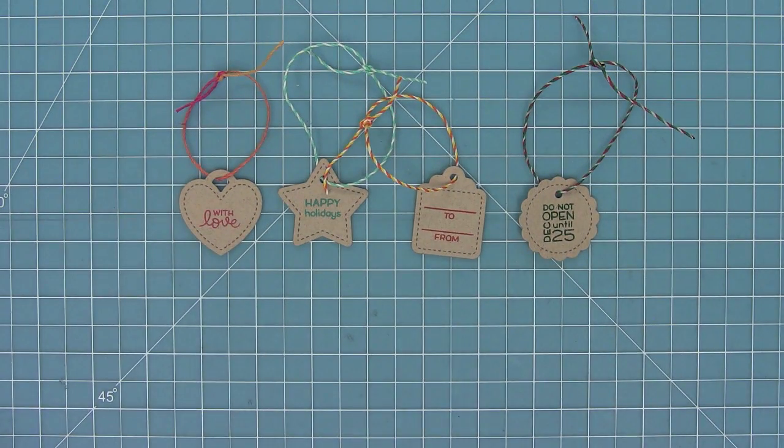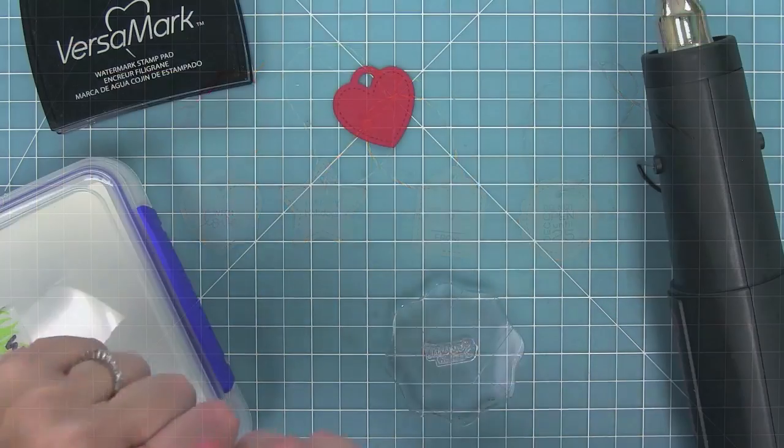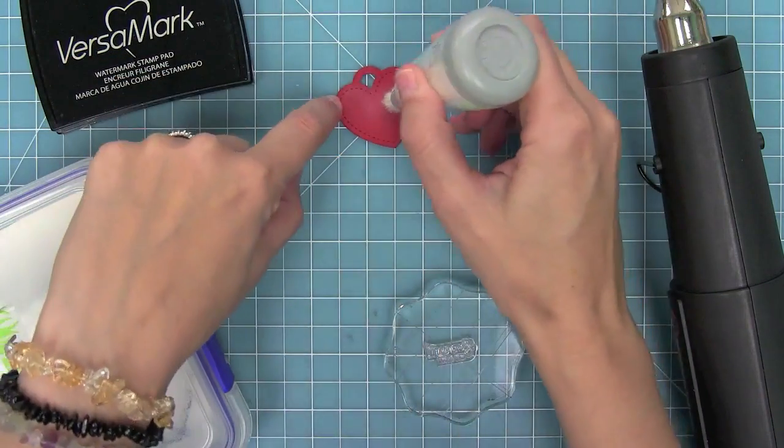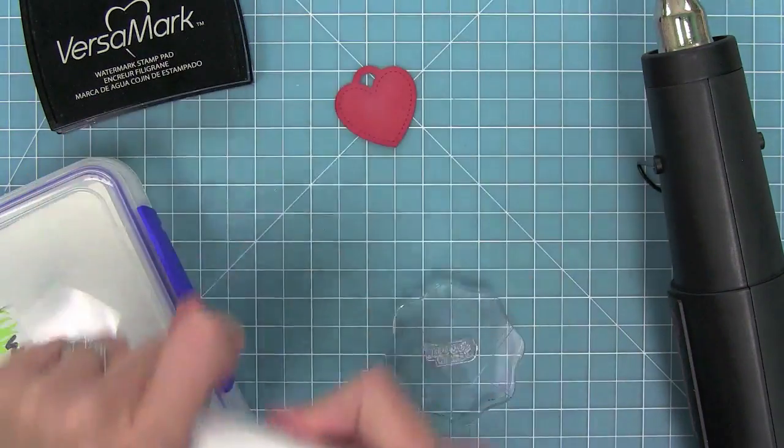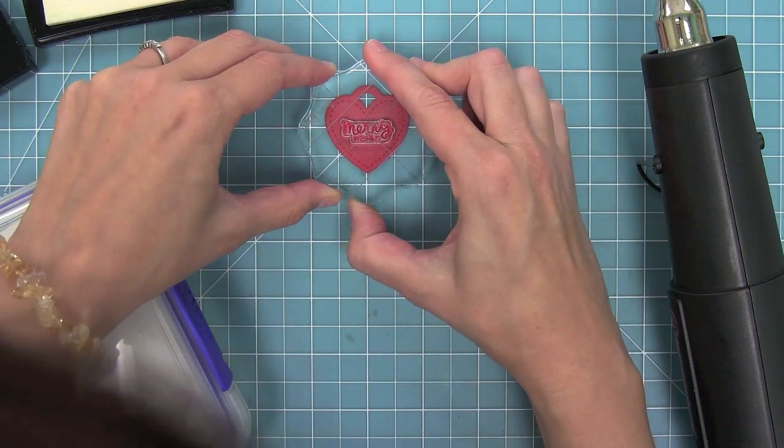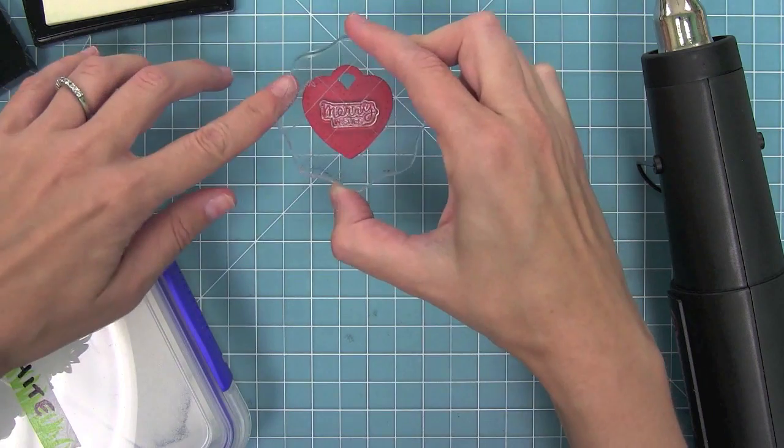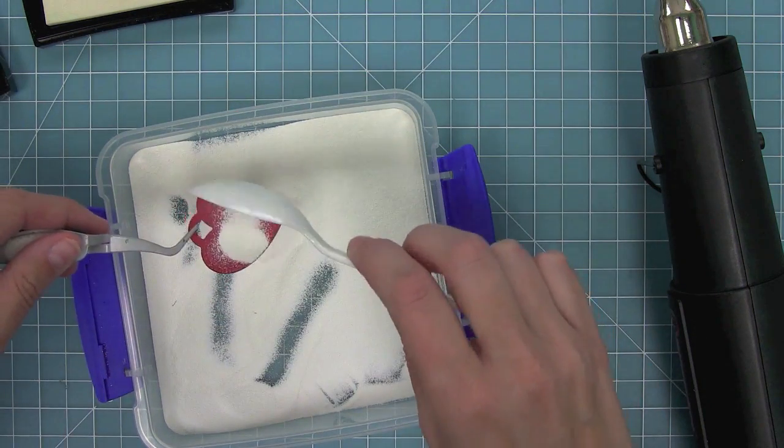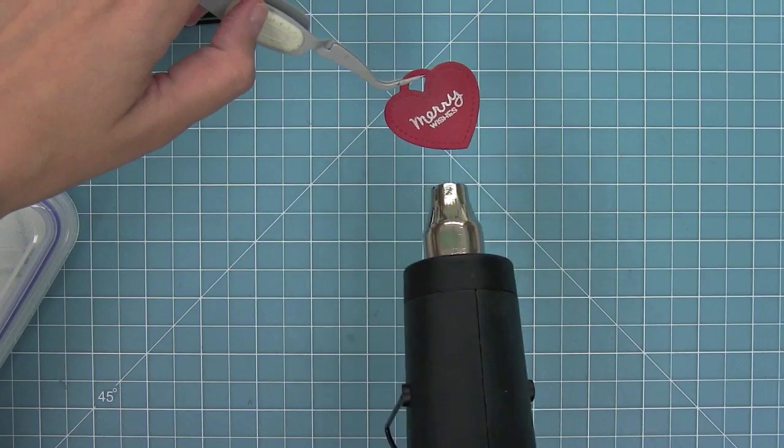Now you can dress up these little tags by cutting them out of colored cardstock and heat embossing on them too. So I'm just going to use my powder tool here to remove any static so that the heat embossing powder only sticks to where I've stamped. I'm going to stamp in some Versamark ink and then add some white heat embossing powder and heat set it. And I love how bold and pretty this looks.